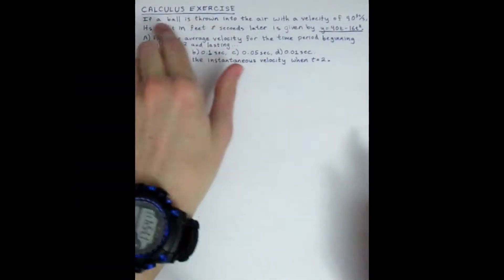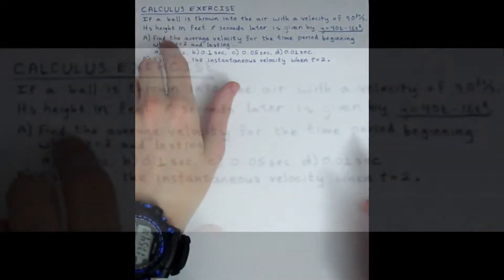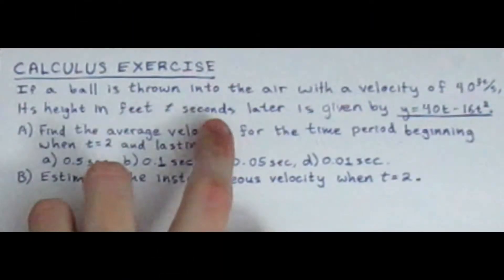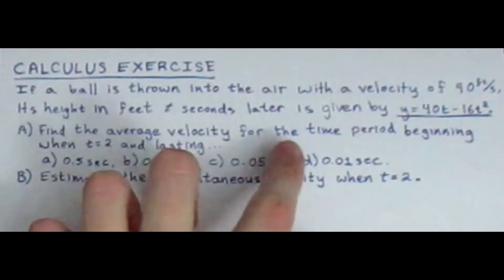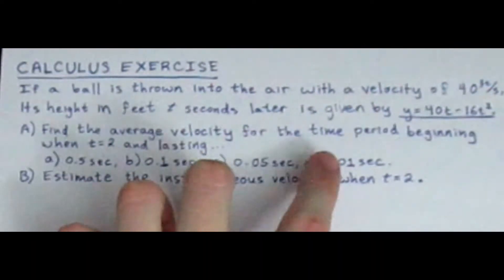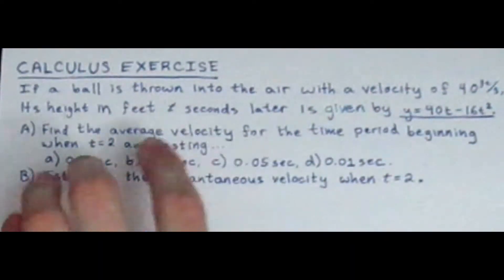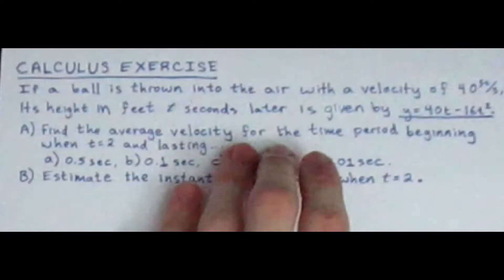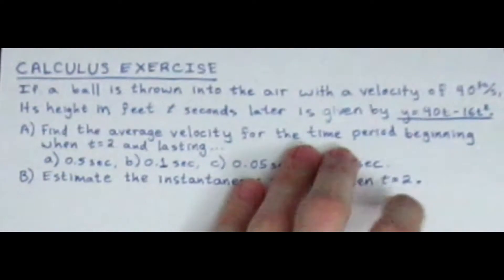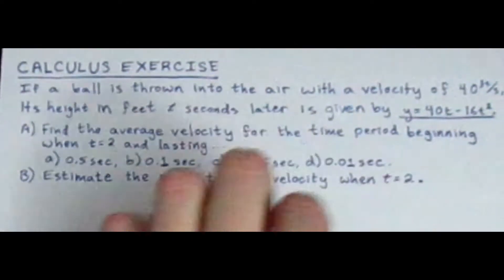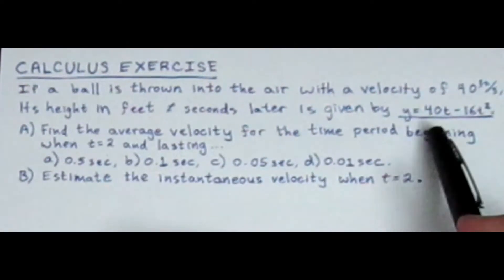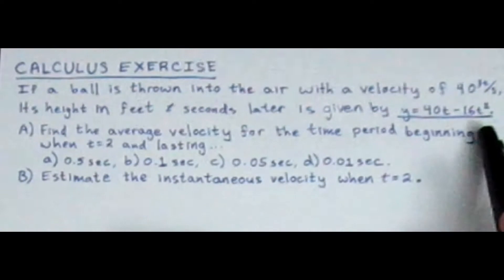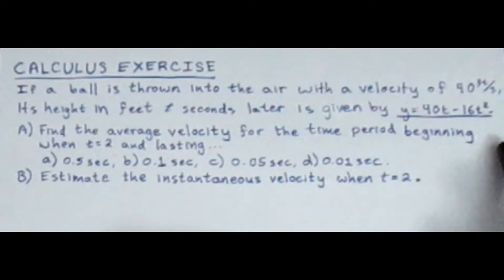In this calculus exercise, we are asked that if a ball is thrown into the air with a velocity of 40 feet per second, its height in feet t seconds later is given by the equation y equals 40t minus 16t squared.